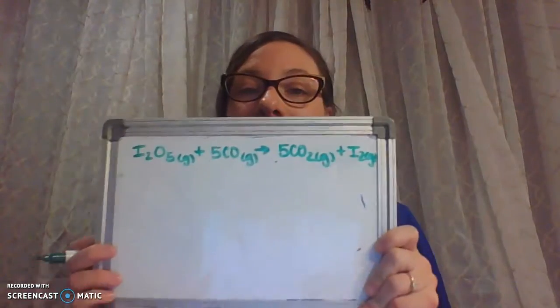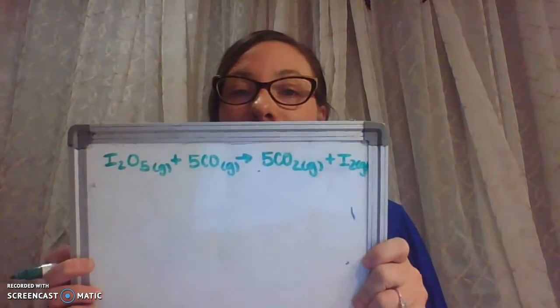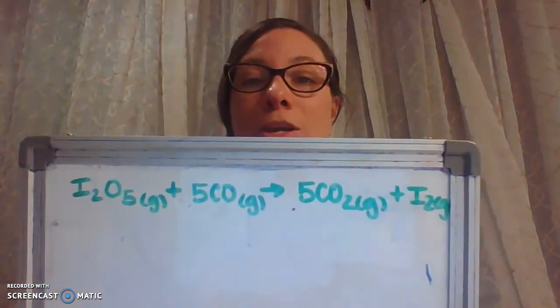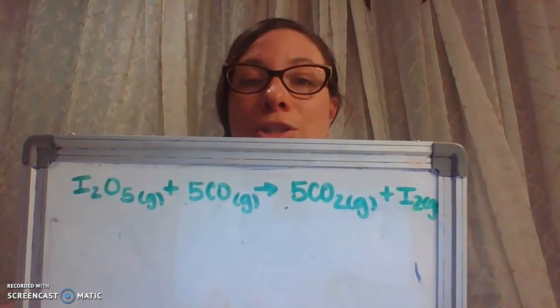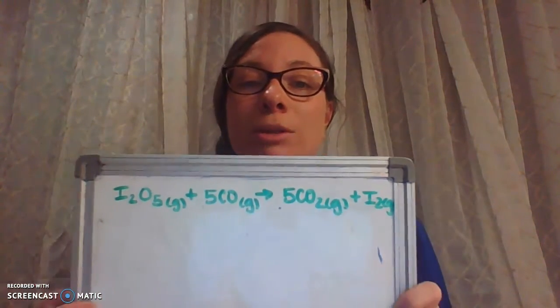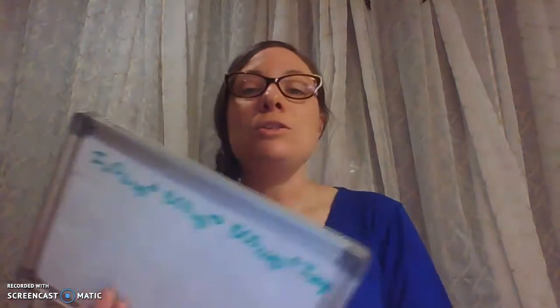The first problem we're going to go through is number one on the stoichiometry review sheet. This is the equation — it is already balanced for you. It was given to you in the problem, already balanced. So we're going to take a look at the problem and then solve.